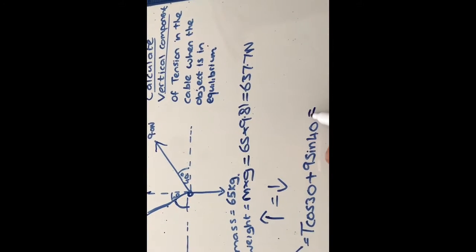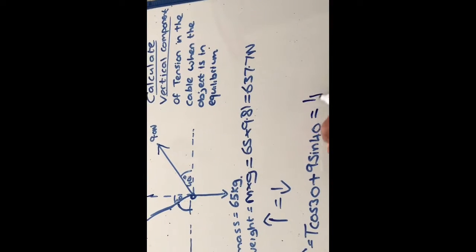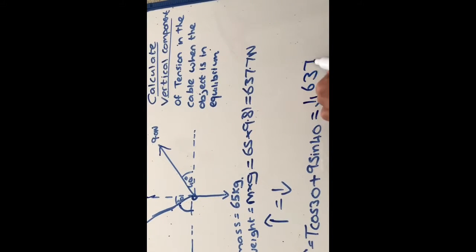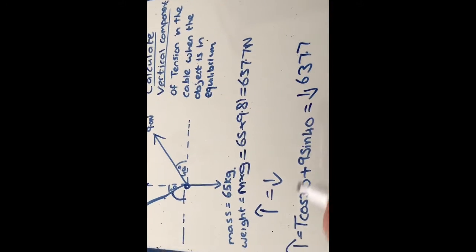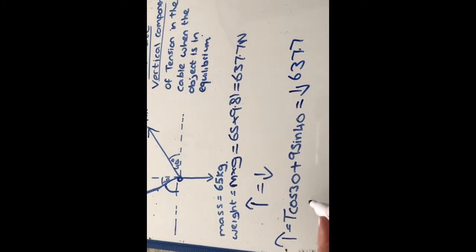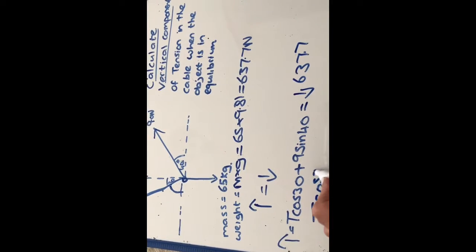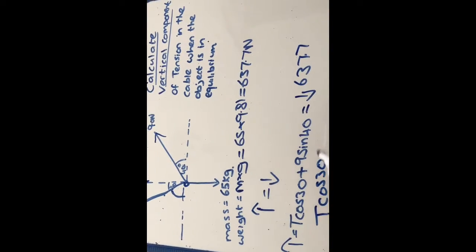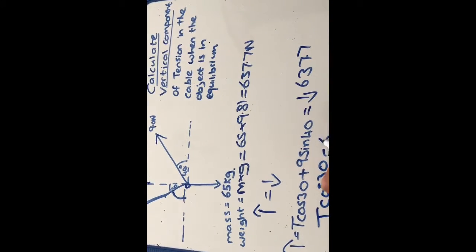Our weight of 637.7. So all we have to do to find the total vertical tension is do the weight take away the 9 sin 40.